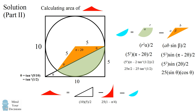Now we need to solve for the sine and cosine of theta. In this right triangle we have one side of length 10 and a height of 5. The diagonal is found by the Pythagorean theorem: 10 squared is 100, plus 5 squared is 25, so the hypotenuse equals the square root of 125. So the sine of theta is 5 divided by the square root of 125, and the cosine of theta is 10 divided by the square root of 125. Substituting and simplifying, the area of this isosceles triangle equals 10.